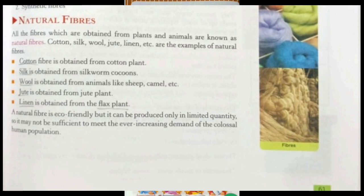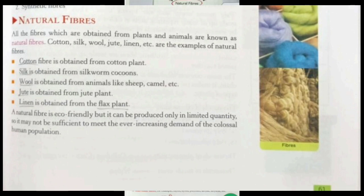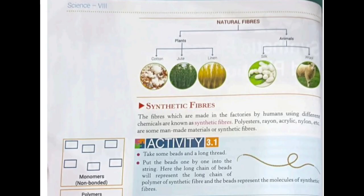As far as the internal structure of synthetic fibers is concerned, they are made up of a chemical substance called a polymer. The name itself suggests: 'poly' means many or repeated, and 'mer' means part. There is a single unit called a monomer, and monomers combine together repeatedly to form a long strand called a polymer.